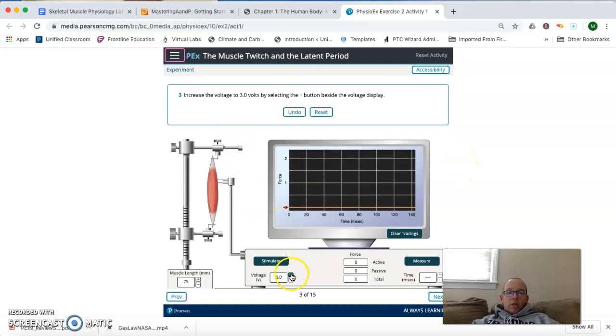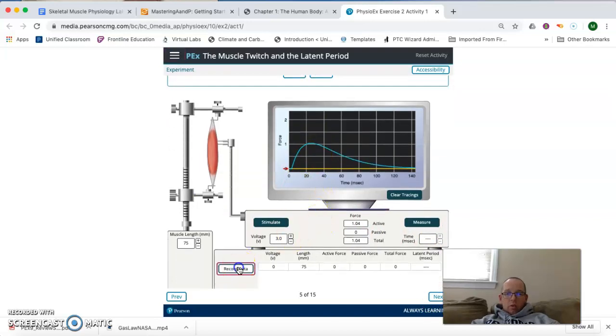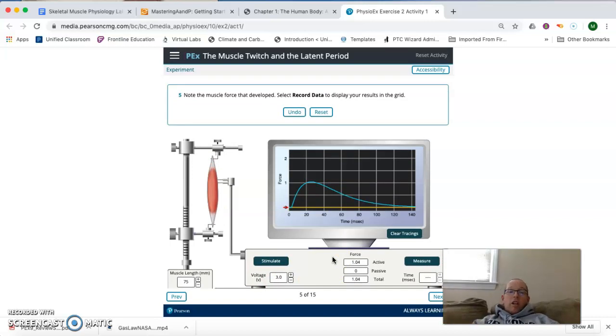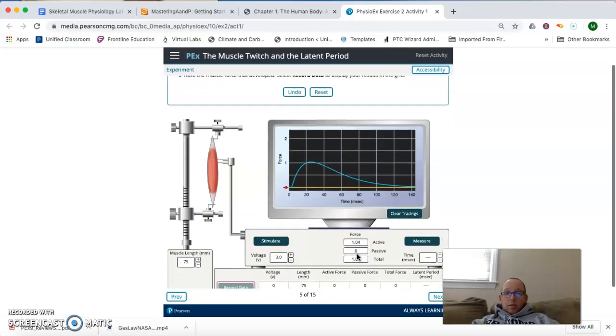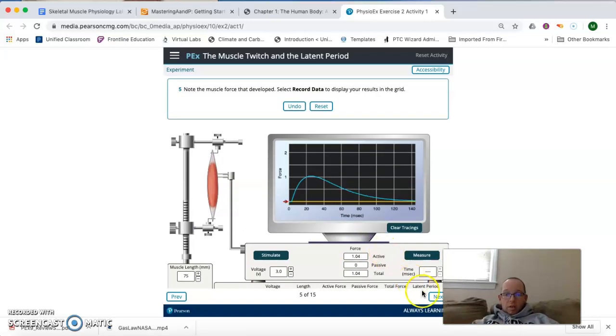So, if we go to the next one, we're going to go ahead and increase the voltage to 3 volts. And this goes in increments of 1 volt, so that doesn't take any time at all. And then it's going to tell us to stimulate again. Again, this time, we actually generate some force. We can see that we generate a force of about 1 gram in this case. And then when we click on next, we note the muscle force that developed, which is about 1 there. And we're going to record that data. And again, we don't need to write anything down because it's going to record everything for us. And it's actually going to graph this stuff really nicely.